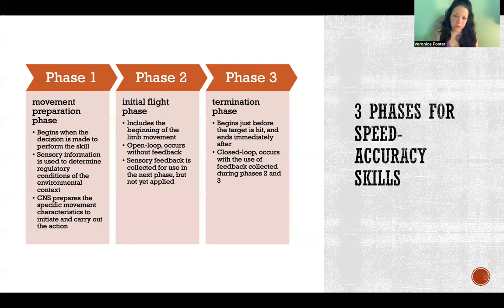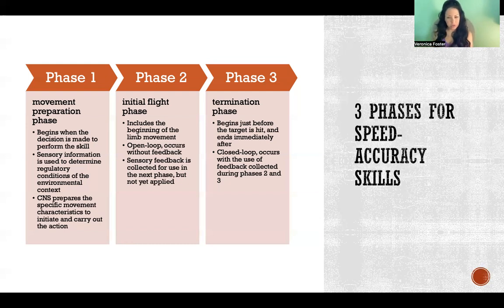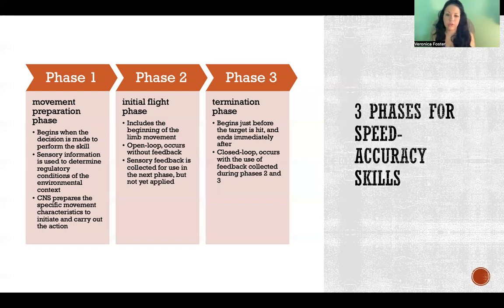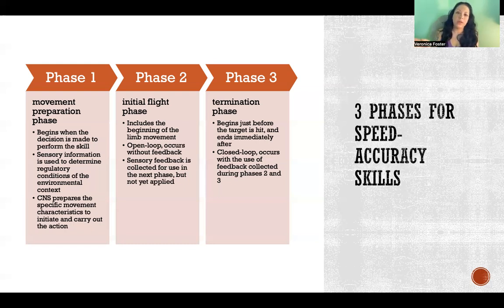Phase three — the termination phase — begins just before you make contact with the target and ends immediately after. This last portion is closed loop, where sensory feedback collected during phase two and continuing into phase three is used to adjust the movement plan, ensuring accuracy in contact with the target.